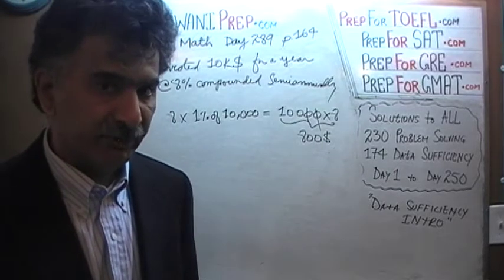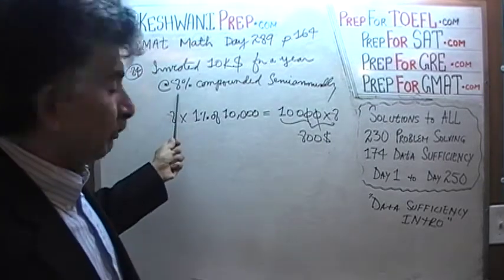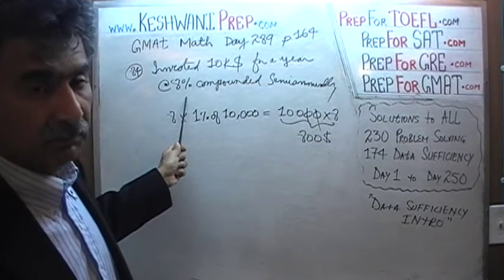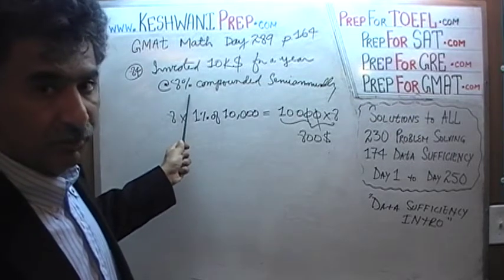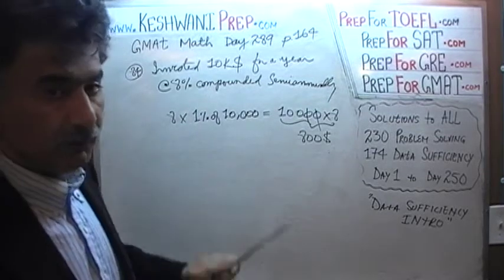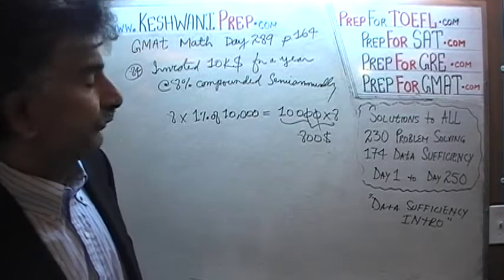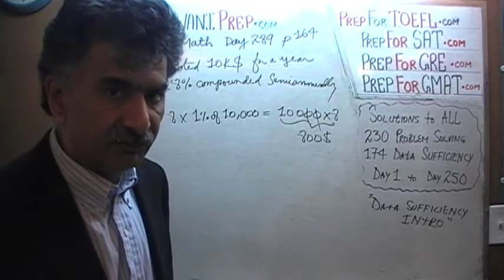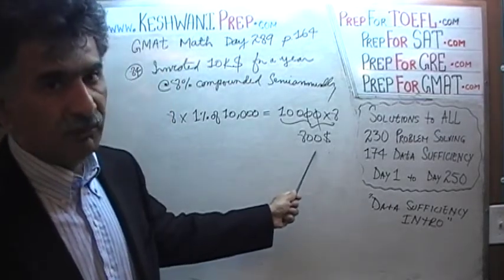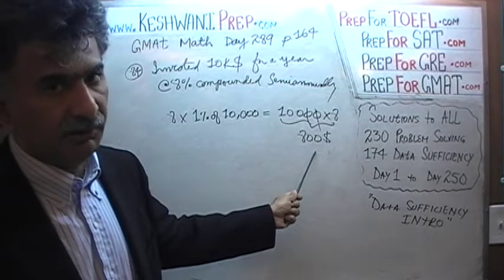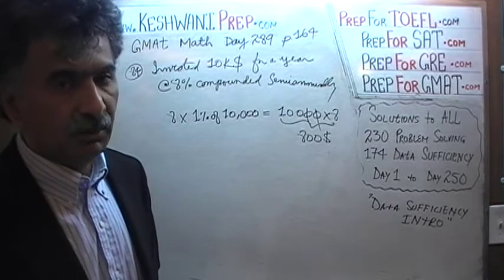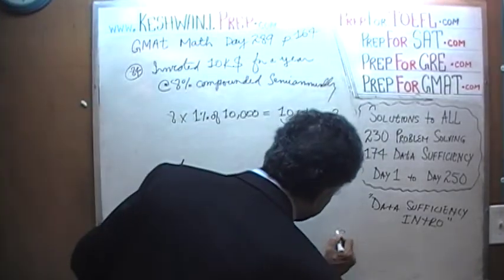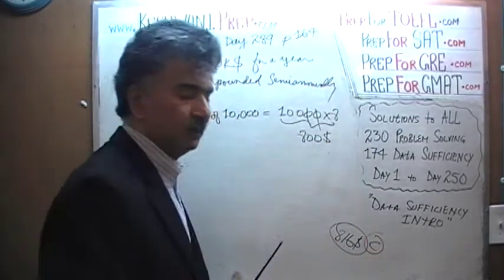Interest rates are always expressed on a per annum basis. At the end of six months we earn only 4% because it's half a year. The compounding makes just a little bit more than $800. The only answer choice that is a little more than $800 is $816. That's our answer — we don't really have to calculate anything further, but we will.